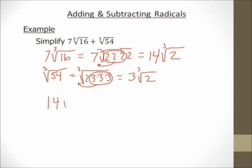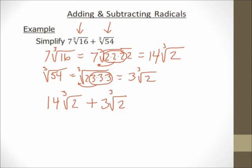So I end up with 14 cube root of 2 plus 3 cube root of 2 — I just replaced my original radicals with their simplified forms. I have like radicals: same index and same radicand. So I can add them. I just add the coefficients: 14 plus 3 is 17, and stick the cube root of 2 on the end. So 17 cube root of 2 is my final answer.